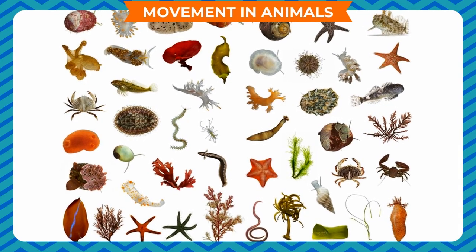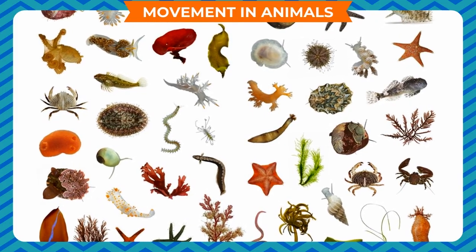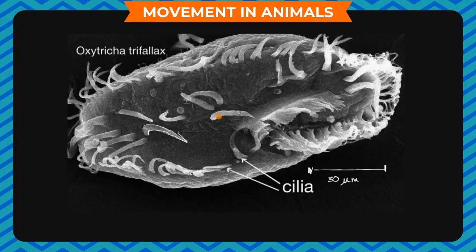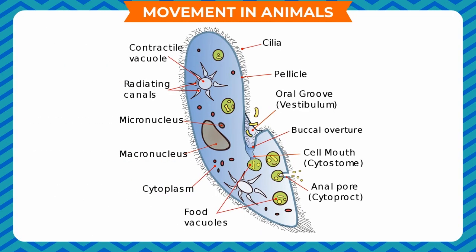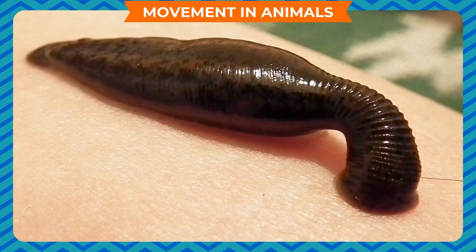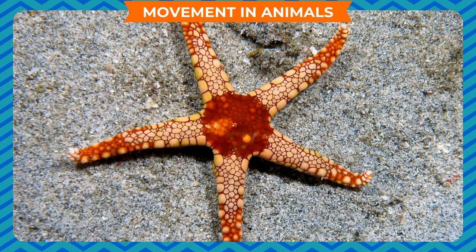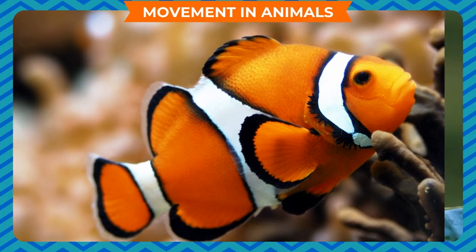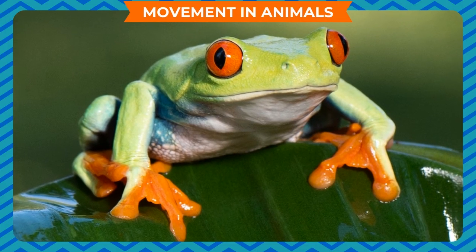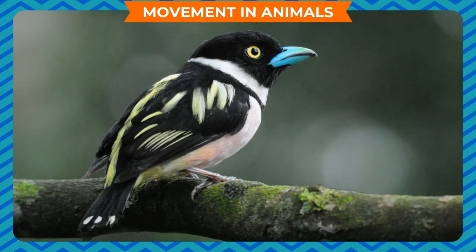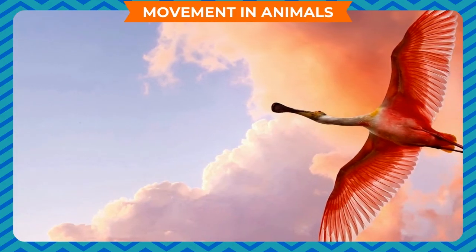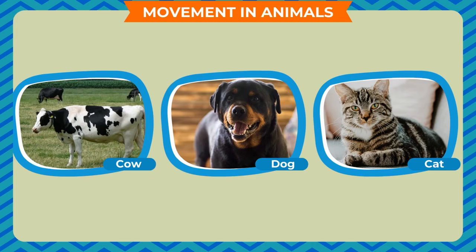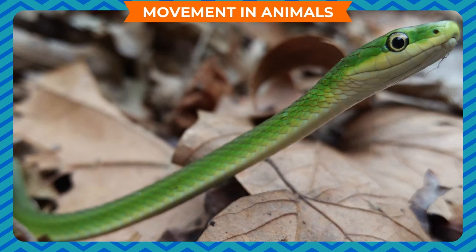Movement in animals: The earth is full of different kinds of creatures and they move in their own style using different kinds of organs. Amoeba moves using pseudopodia (false feet); Paramecium moves with the help of cilia; leeches move with the help of suckers; starfish move with arms radiating in all directions. Fishes have a streamlined body and move with the help of fins and tail. Frogs move with webbed feet on their hind limbs. Birds have a streamlined body and move with wings attached to strong muscles. Higher animals like cows, dogs, and cats have advanced forelimbs and hind limbs for movement. Snakes make slithering movements with the help of scales on their body.